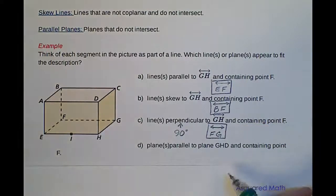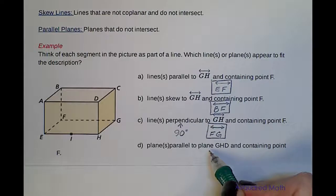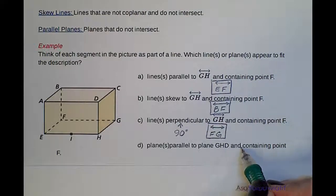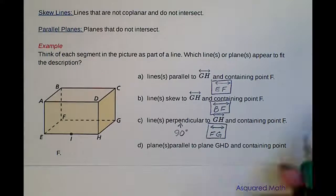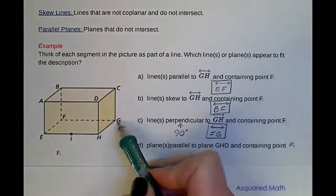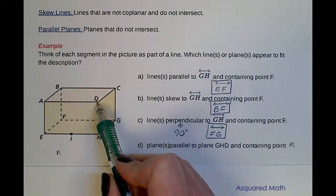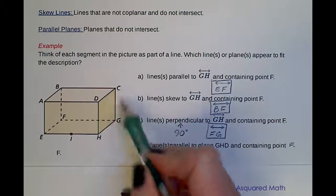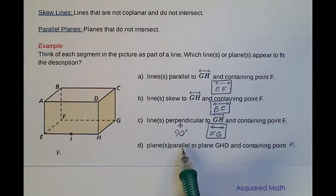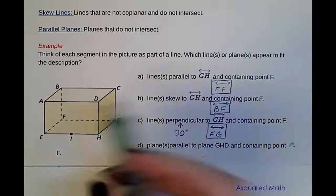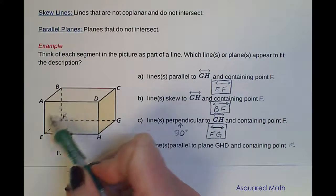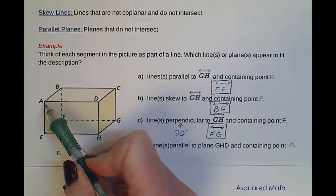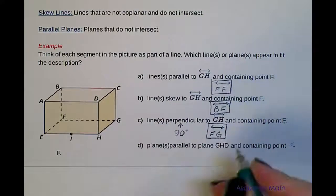The last thing in this example is identifying the planes that are parallel to plane GHD and containing point F. GHD — start at G, go to H, go to D — which means we are looking at the right-hand plane of this rectangular prism. Something parallel to GHD would be the left-hand side, and we can identify this as plane ABF, because we want to contain point F.